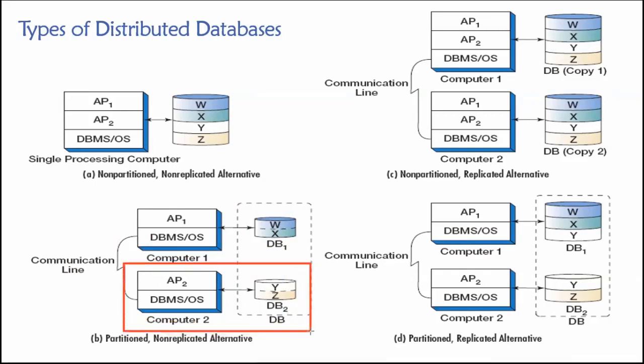And then we have tables Y and Z stored on machine number two. And so in this case, we've divided the database across two different physical computers. And you'll see that there's a communications line that interconnects them. So in this way, we can treat this partitioned database still as just one. Conceptually it's still one database, even though it's spread across multiple machines. And of course, this communication line these days typically would be the internet.